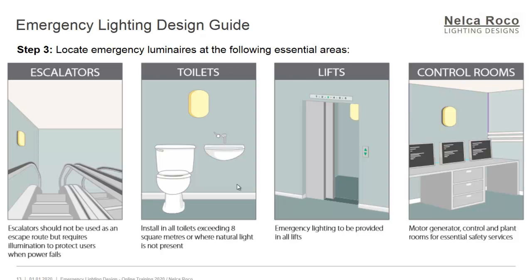Step 3: locate emergency luminaires at the following essential areas. For escalators — they should not be used as an escape route, but they require illumination to protect users when power fails. The escalator must not be used for emergency exits, but because people may already be on it during a power down, there should at least be an emergency backup to assist them to go down slowly and safely.